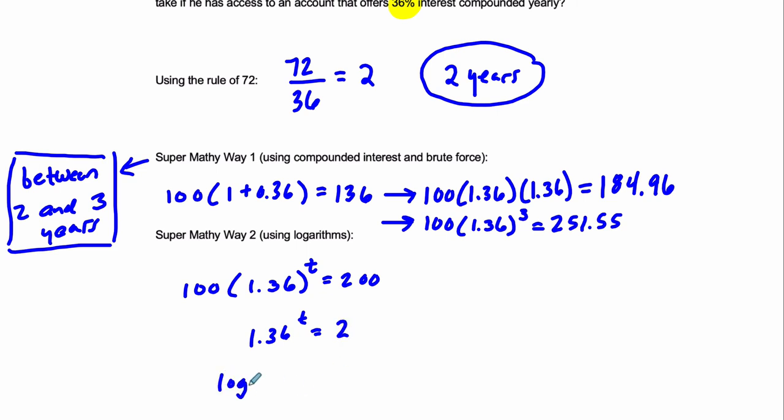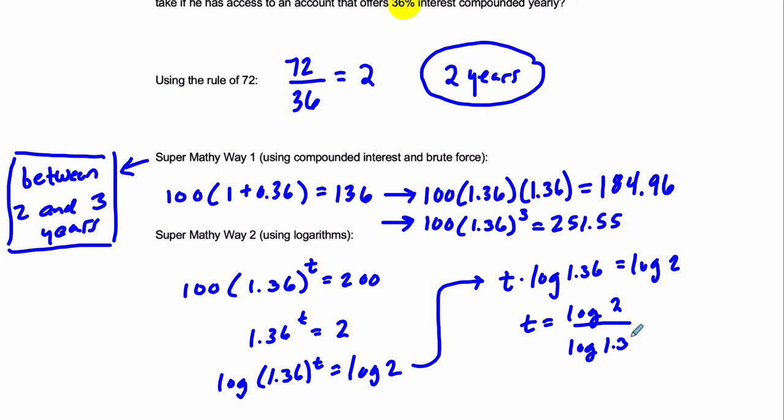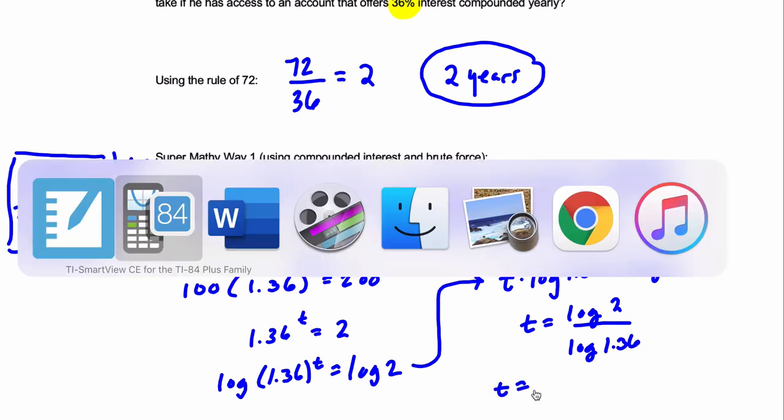Take the log of both sides. The log of 1.36 to the t equals the log of 2. And I'll write, keep going. That's the same thing as t times the log of 1.36, which equals the log of 2. And then finally, you can jump to this step, actually from the beginning if you want. It's the log of 2 divided by the log of 1.36. And that will be our most precise answer on this list.